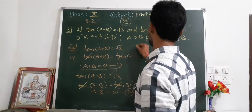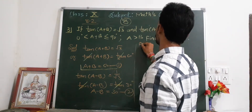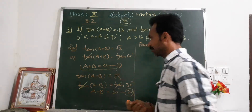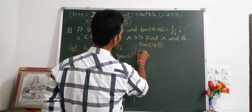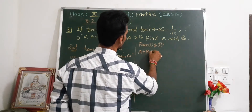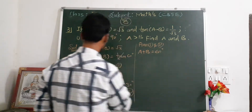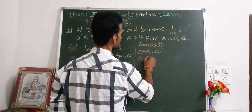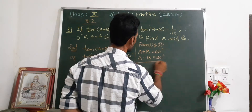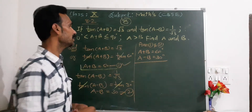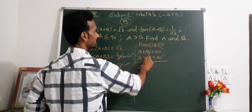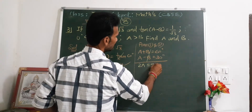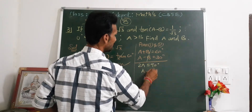Now solve equations one and two by the elimination method. Equation one: a plus b equals 60 degrees. Equation two: a minus b equals 30 degrees. Adding both equations: 2a equals 90 degrees.